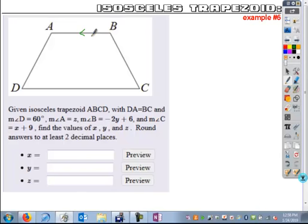If you're given this problem, you're told you have this trapezoid ABCD where AD and BC are equal. That tells you you're dealing with an isosceles trapezoid.